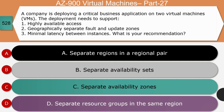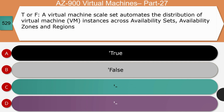Question 8: A company is deploying a critical business application on two virtual machines. The deployment needs to support: (1) high availability, (2) geographically separate fault and update zones, and (3) minimal latency between instances. Options: separate regions in a regional pair, separate availability sets, separate availability zones, or separate resource groups in the same region. The right answer is separate availability zones. Separate resource groups and separate regional pairs will not guarantee high availability with minimal latency, and there is no concept called separate availability sets.